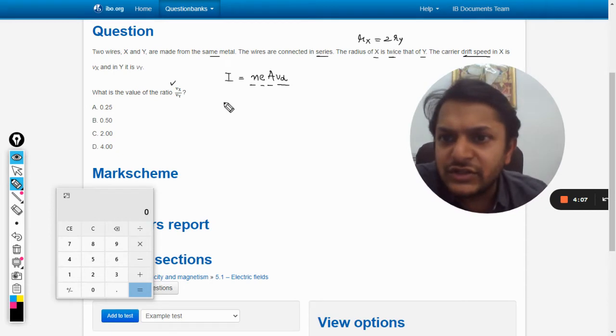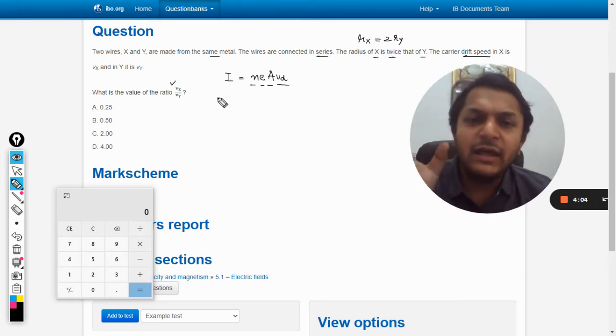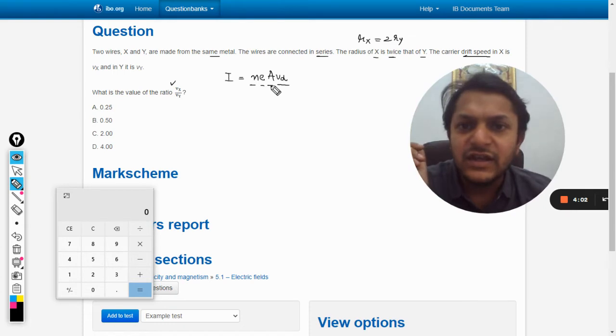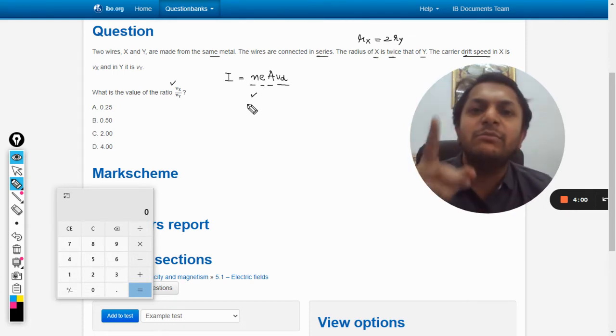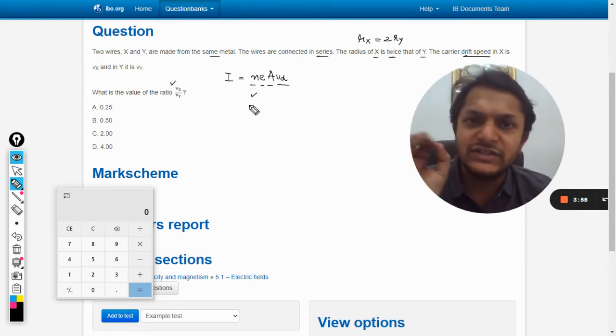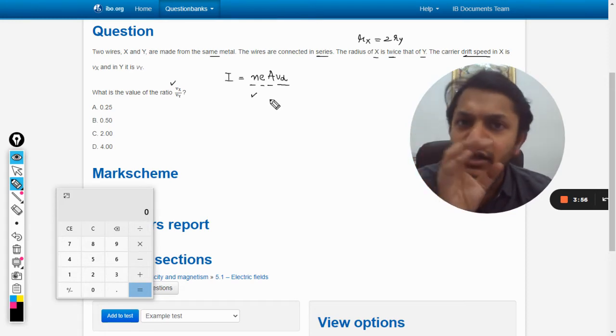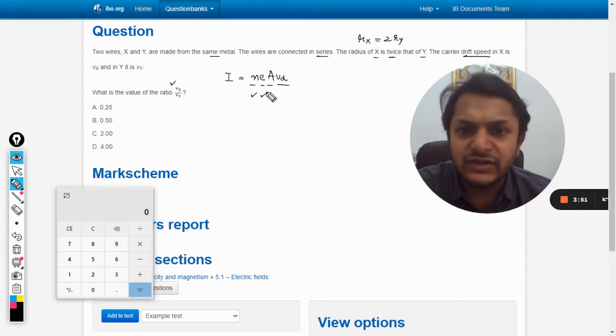Now according to the question there are two different wires X and Y made up of the same material, it means both of them have the same number of electrons per unit volume, the same electron density, and the charge on the electrons is the same. Obviously the areas are different.